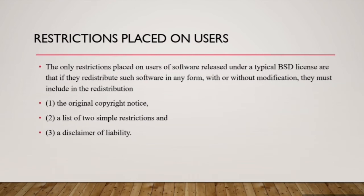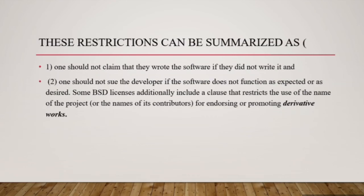Let us summarize those two restrictions. The first restriction is one should not claim that they wrote the software if they did not write it. The second restriction is one should not sue the developer if the software does not function as expected or as desired.